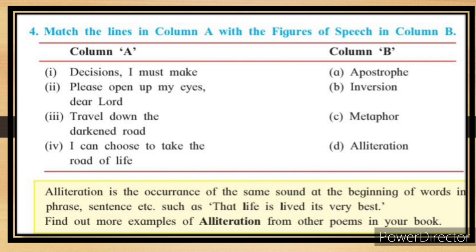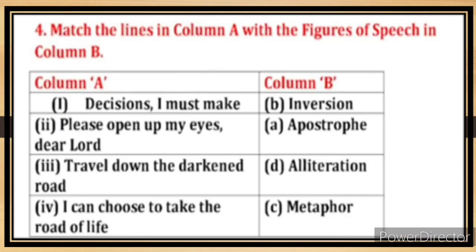Find more examples of alliteration from other poems in your book. Alliteration is when the same alphabet or sound is repeated — for example, in 'life lived,' the letter L sound repeats. Answers: 'Decisions I must make' — inversion; 'Please open up my eyes dear Lord' — apostrophe; 'Travel down the darkened road' — alliteration; 'I can choose to take the road of life' — metaphor.